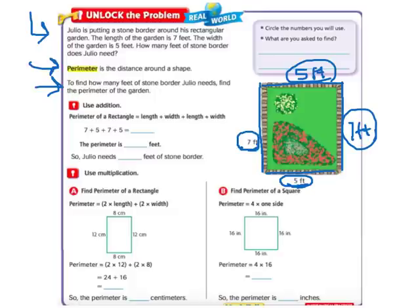So 7 plus 7 is 14, 5 plus 5 is 10, so 10 and 14 make 24. The perimeter is 24 feet. So Julio needs 24 feet of stone border to go around.